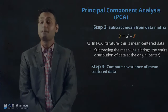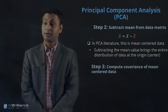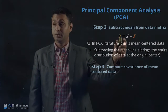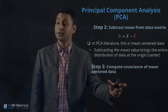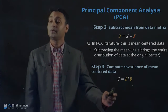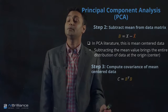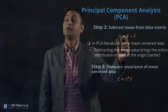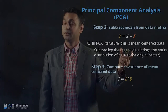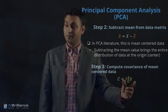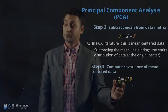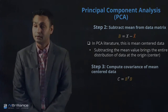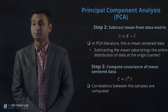We then move to step three: computing the covariance of the mean-centered data. We take the B matrix and compute a covariance matrix C, which equals B-transpose multiplied by B itself. So C is the product of B^T and B, and that's how we get the covariance matrix.